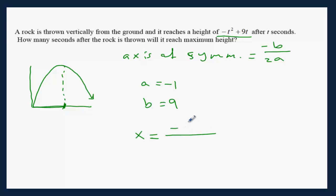X equals negative B over 2A. Negative B, B in this case is 9, over 2 times A which is negative 1. That's going to be X equals negative 9 over negative 2, which is positive 4 and a half, or 9 over 2.